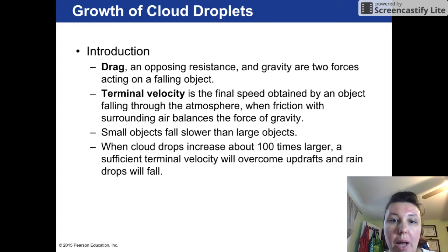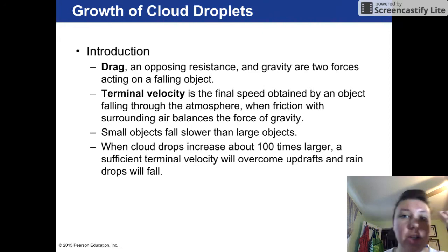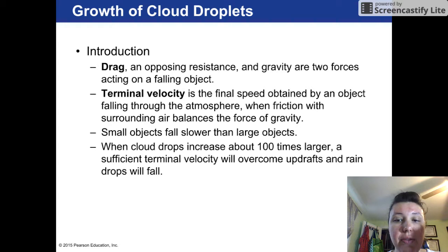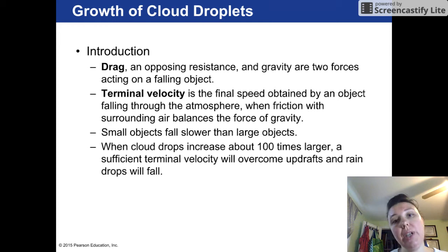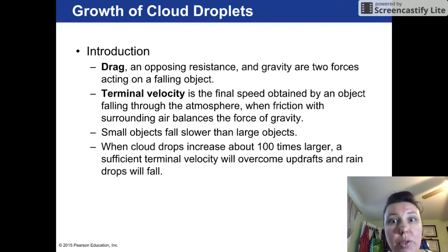Small objects fall slower; larger objects will fall faster. When cloud droplets increase by about 100 times larger than their original condensation nuclei size, there is a sufficient terminal velocity that it will overcome the updraft — meaning anything that was holding it up or allowing it to be buoyant in place will eventually be exceeded once that water droplet increases to a certain mass.